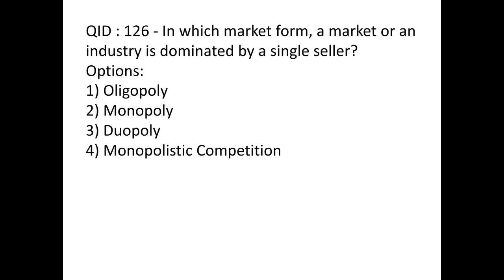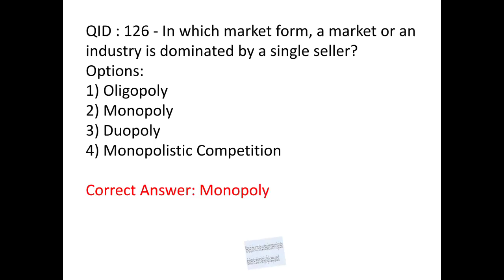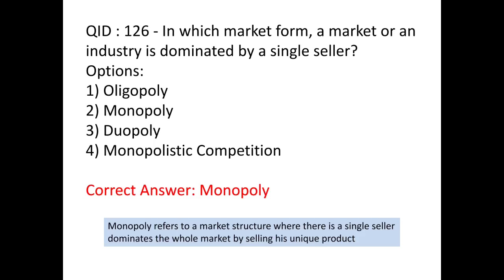In which market form is a market or an industry dominated by a single seller? The answer is Monopoly. Remember that MONO means single seller, while Oligopoly means few sellers. Monopoly is the correct answer — a market or industry which is dominated by a single seller selling a unique product. Also note: bilateral monopoly means one single seller and one single buyer.